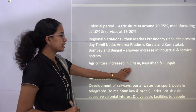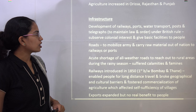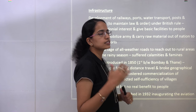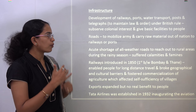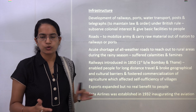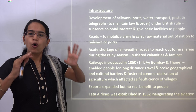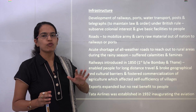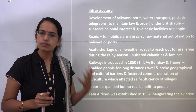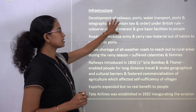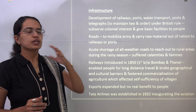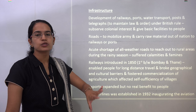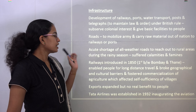Agriculture flourished in areas like Rajasthan, Punjab, and Odisha. On infrastructure, Britishers brought significant development — railways, roadways, ports, transportation, telegraphs, and postal networks. Telegraphs were meant for maintaining law and order, and postal services for communication, but these were not meant to provide basic facilities to common people. The sole objective was to subserve British rule. Roads were developed to mobilize the army and move raw materials through railways and major ports, while extreme rural areas had no all-weather roads and were stuck in cycles of poverty and famine.